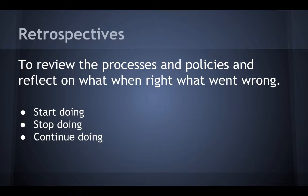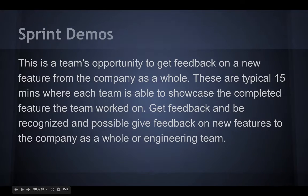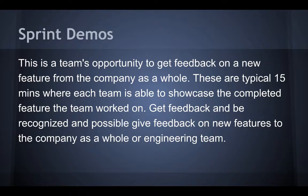Retrospectives: although there are many ways to conduct an agile sprint retrospective, our recommendation is to conduct it as a 'start doing, stop doing, or continue doing' meeting. This is perhaps the simplest but most often the most effective way to conduct a retrospective. Each team member is asked to identify specific things that the team could start doing, stop doing, and continue doing. From these insights, you feed them back into the next sprint as a feedback loop. Sprint demos: this is the team's opportunity to get feedback on new features from the company as a whole. They are typically 15 minutes long and showcase the new feature or set of features — a chance to get feedback from the whole team and company to help guide the product direction.